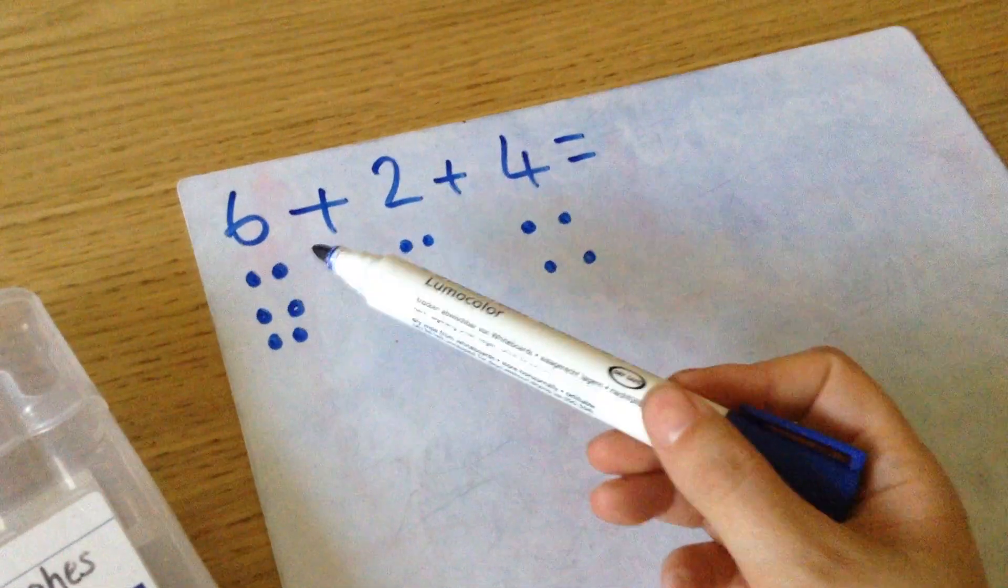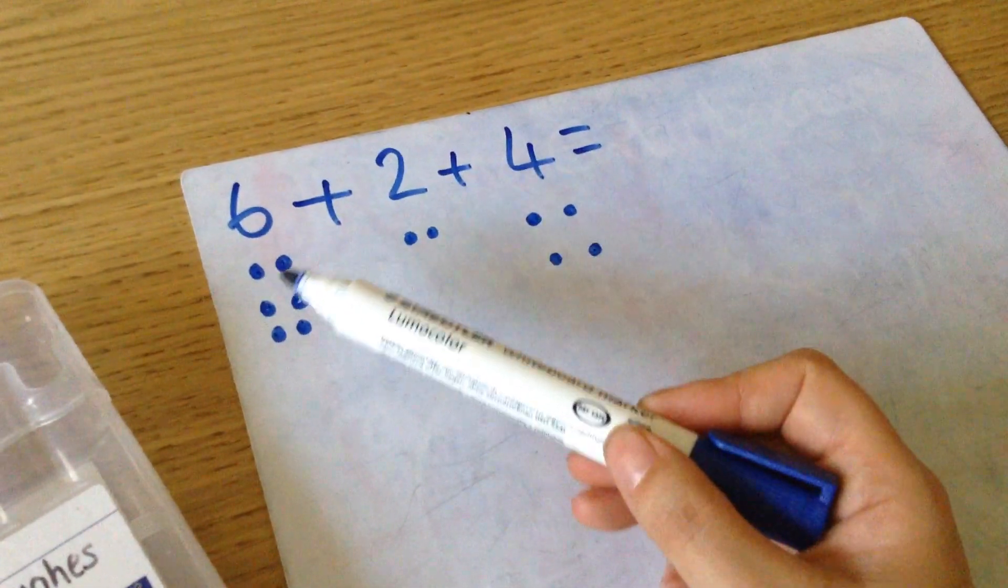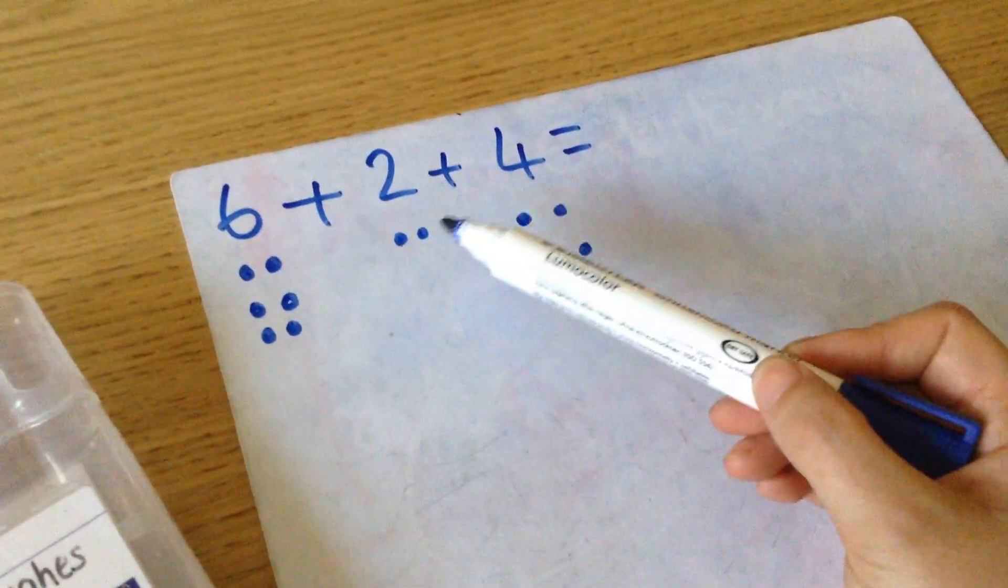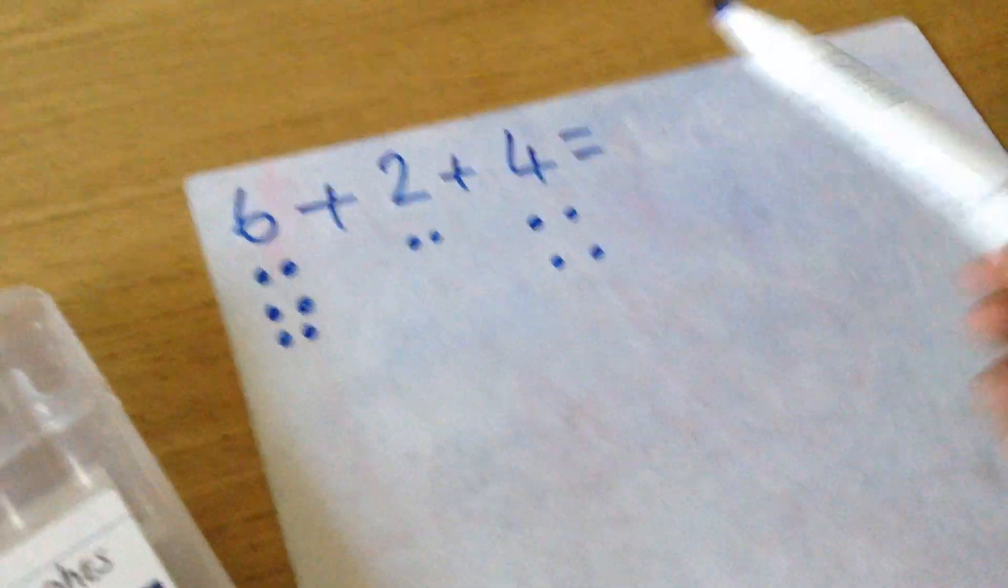I could then count how many ones I've drawn. One, two, three, four, five, six, seven, eight, nine, ten, eleven, twelve.